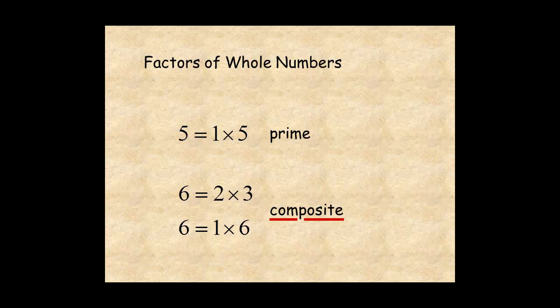Finally, the numbers 0 and 1 are whole numbers, but they are neither prime nor composite.